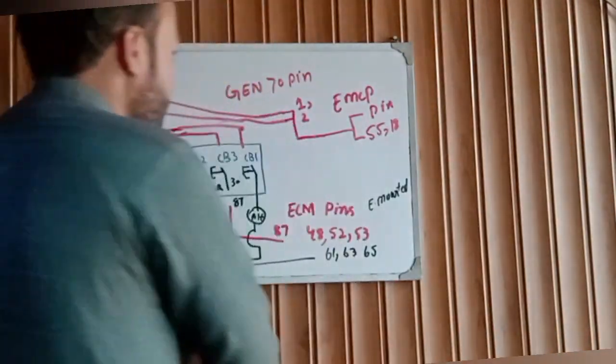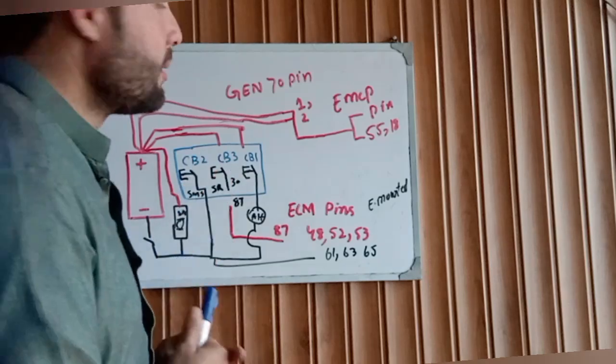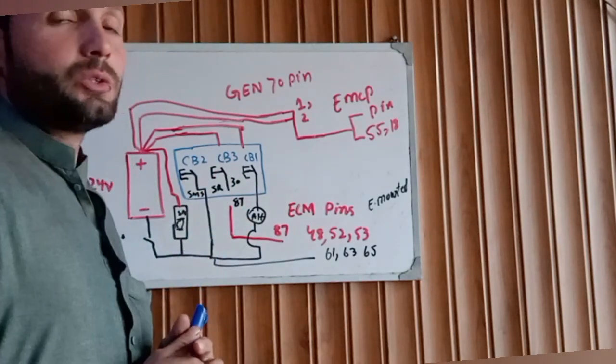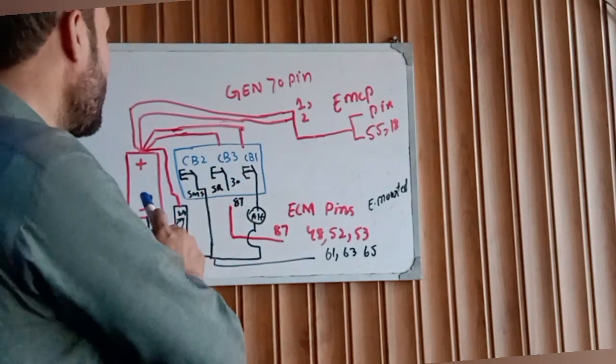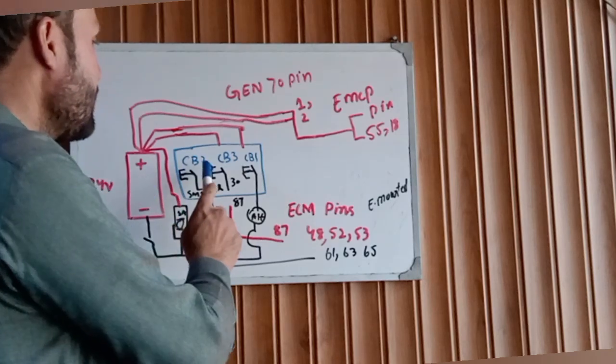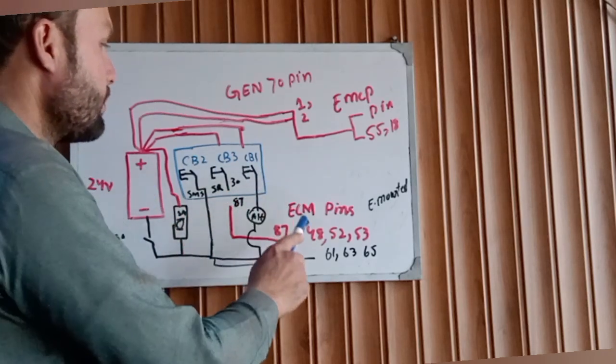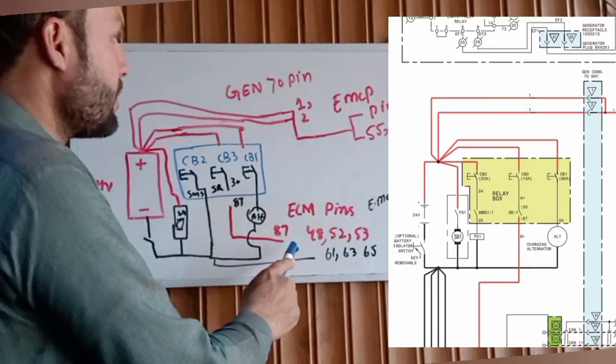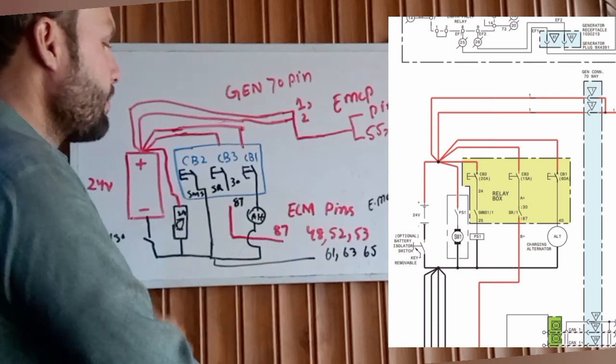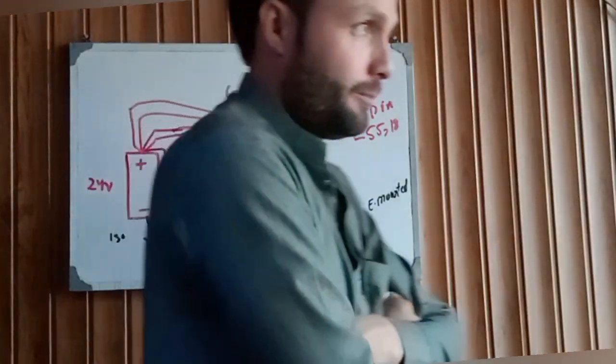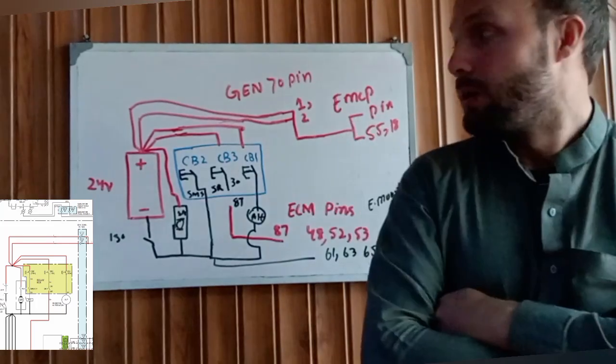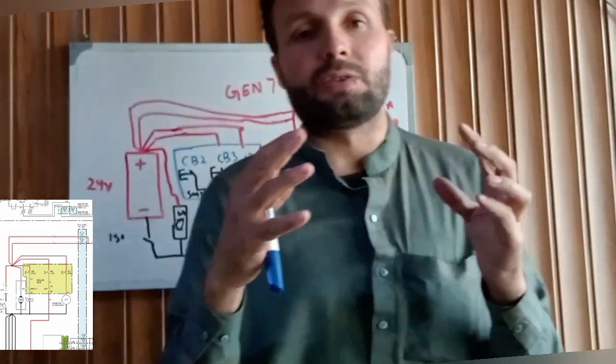As you can see here, I drew the diagram before because I don't want to waste time. As you can see here, we have a battery relay box, EMCP connection, and engine control module connection. This is the two connector interface from the controller EMCP to the engine control module.